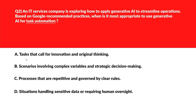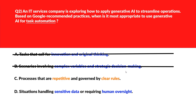Let's bring the heat to this one — it's all about task automation. Option A says tasks that call for innovation and original thinking. Creative tasks need originality which generative AI may not reliably produce without human input — incorrect. Option B says scenarios involving complex variables and strategic decision making. Strategic decision making involves context and judgment that AI may not handle reliably — wrong answer.